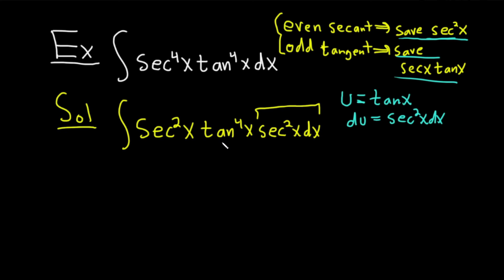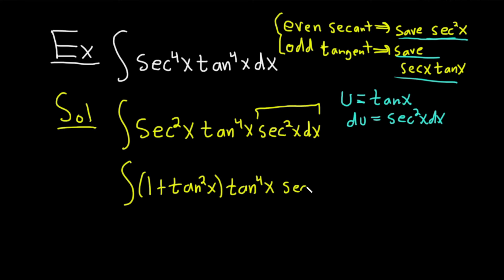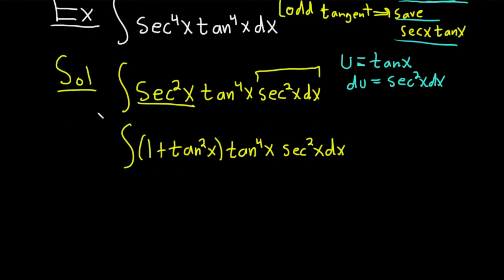We're still in a situation where we have tangent to the fourth but also an extra secant squared. So we rewrite that secant squared as 1 plus tangent squared — that's an identity. Then we have (1 plus tan squared) times tangent to the fourth, and secant squared x dx. Secant squared equals 1 plus tan squared. Now we have only tangents, so substituting: (1 plus u squared) times u to the fourth, and secant squared x dx is our du.